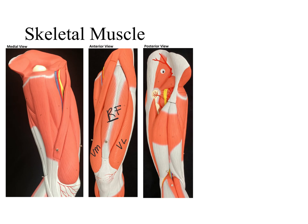The quadriceps femoris is in the anterior aspect of our thigh. We also see crossing from side to side the longest muscle in our body, which is called sartorius. So this is all in the anterior aspect of the thigh.